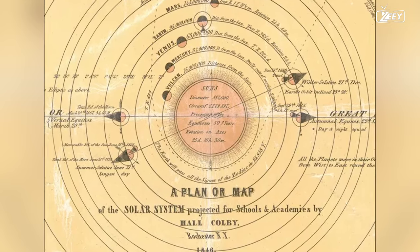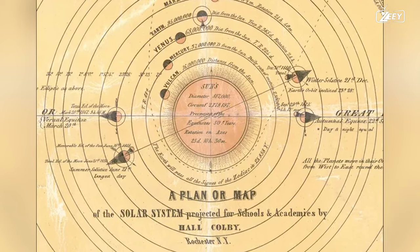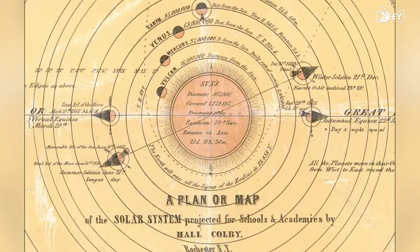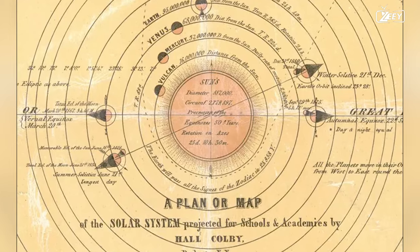Mercury, Venus, Earth, and Mars are followed by Vesta, Juno, Ceres, and Pallas, then Jupiter, Saturn, and Uranus.